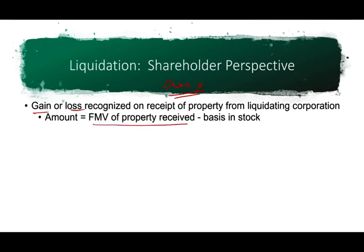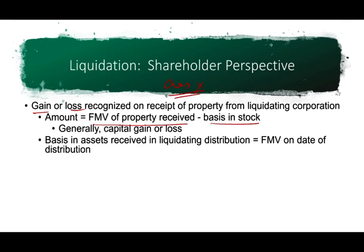Fair market value of property received minus the basis. Now, if you receive property and there's a liability attached to that property, then you have to reduce it by the liability. Generally, gains or losses are recognized. The basis in the asset received is the fair market value as of the date of the distribution. So whatever the fair market value is on that date — that's the basis in the asset received, and going forward that's going to be your basis.